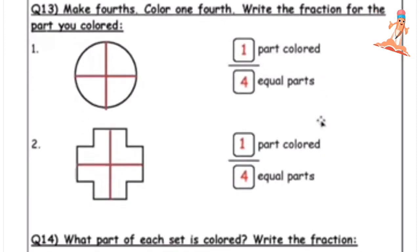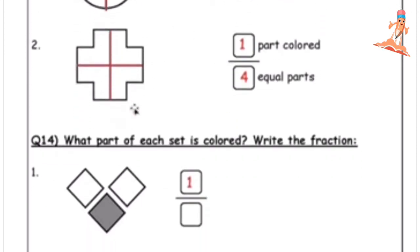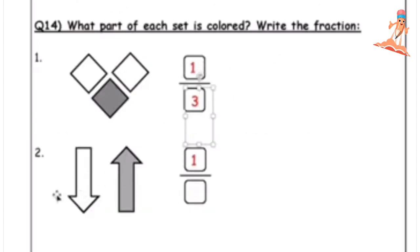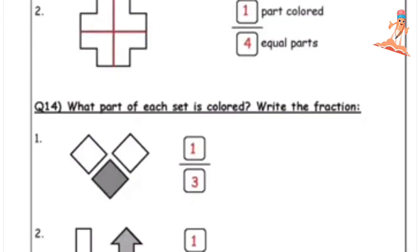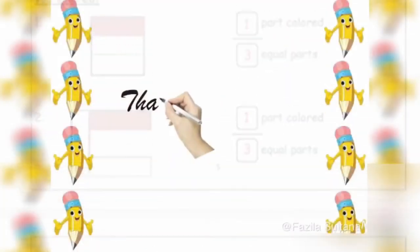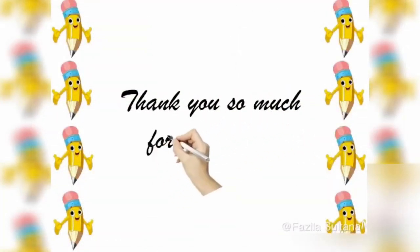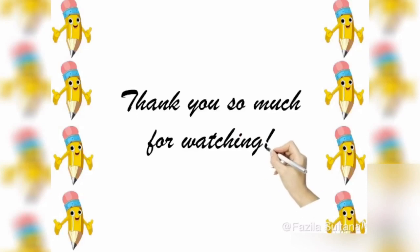Now, what part of each set is colored? Write the fraction. How many in this set? Three. How many are colored? One — one third. Next set: how many? Two. How many colored? One — one half. I hope you understood. Thank you so much for watching! Bye — please subscribe!